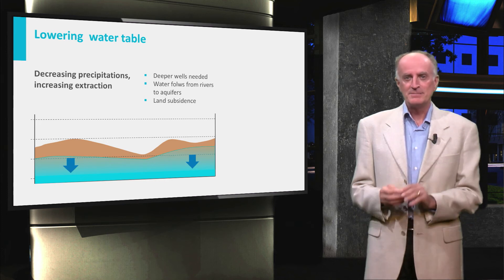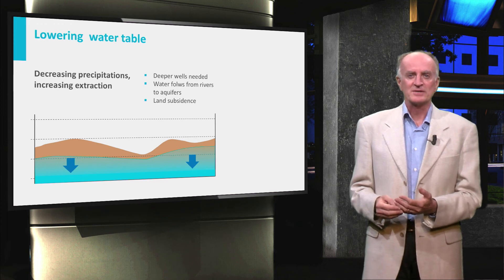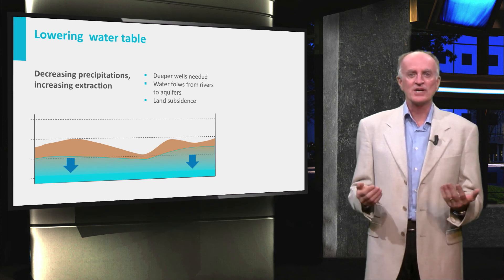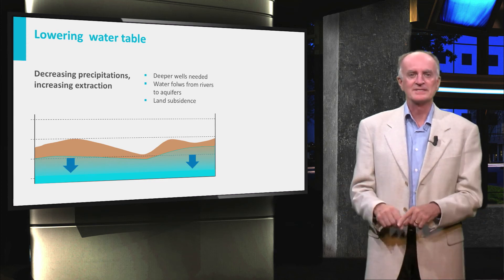For instance, deeper wells will need to be made and water bodies, such as rivers which act as discharge areas, will start charging the aquifer with water moving from the river to the aquifer itself.